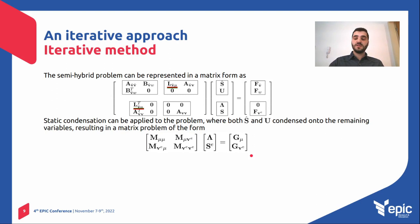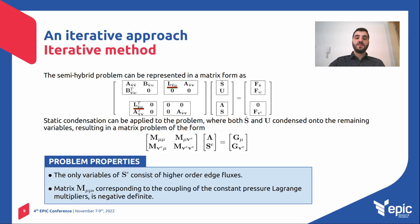So there are some properties I need to talk about this final problem we are solving. One of them is that the only flux variables we have in this problem here are the higher-order edge fluxes, because the divergence-free bubble fluxes are also condensed. The other property is that this diagonal here, the matrix M_μμ, corresponding to the coupling of the constant pressure Lagrange multiplier, is negative definite.